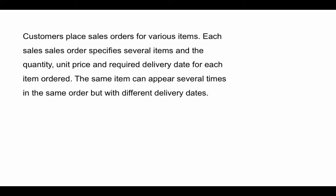The next requirement says customers place sales orders for various items. By items we understand from context that we're talking about products. Each sales order specifies several items and the quantity, unit price, and required delivery date for each item ordered. So we're talking about a typical sales order — for example, five pounds of coffee, six boxes of XYZ cereal, and two cans of soda.